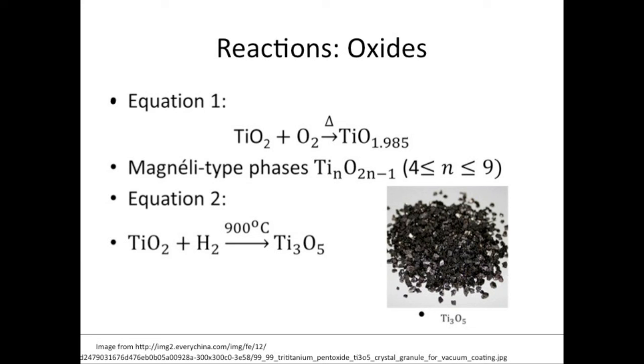In the first equation, it is shown that titanium dioxide reduces to TiO1.985 when it is heated at high temperature in the presence of titanium. Titanium gives numerous non-stoichiometric oxide phases which are called Magnéli type phases with the formula TinO2n-1, where n is greater than or equal to 4 but less than or equal to 9. Common Magnéli type phases are Ti3O5 and Ti2O3. In the second equation,